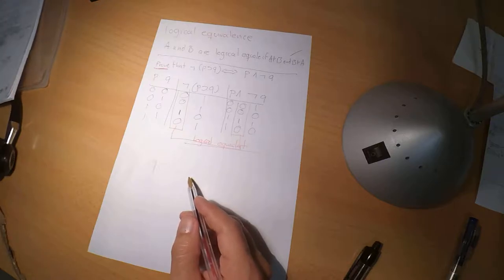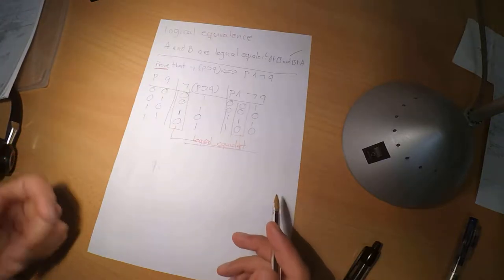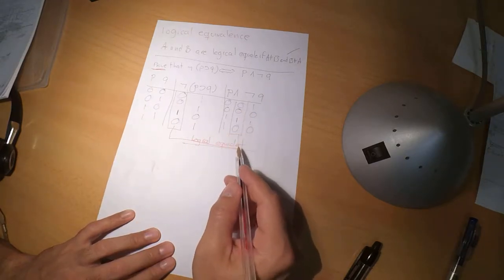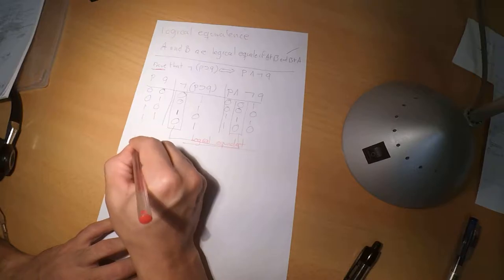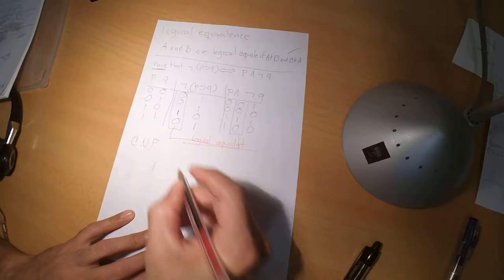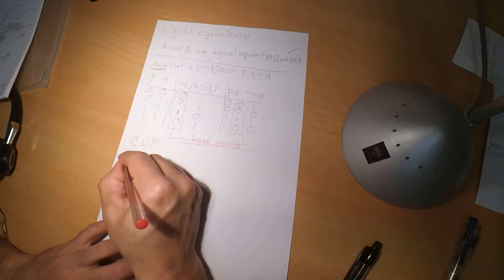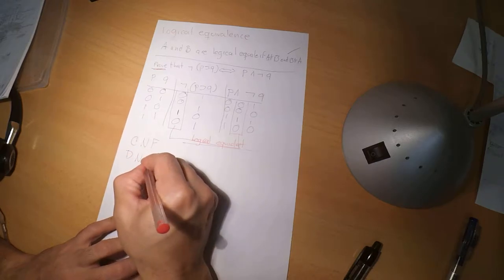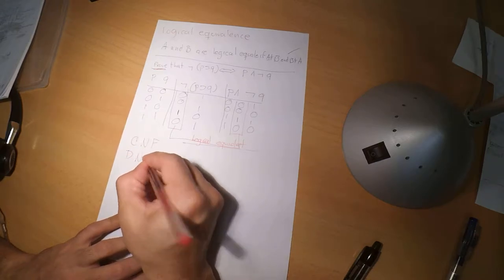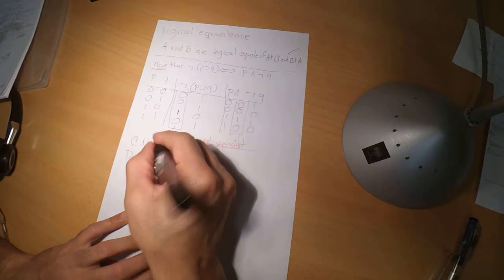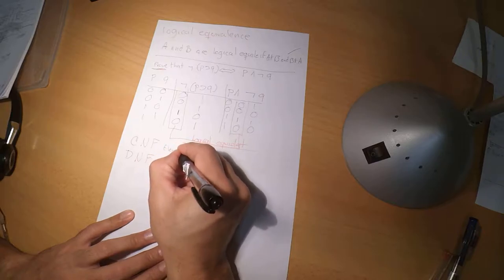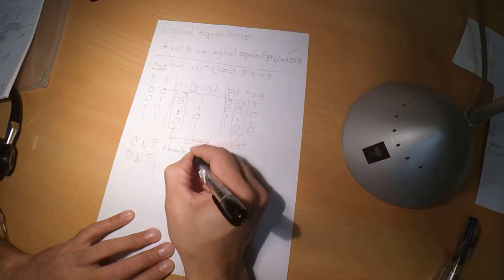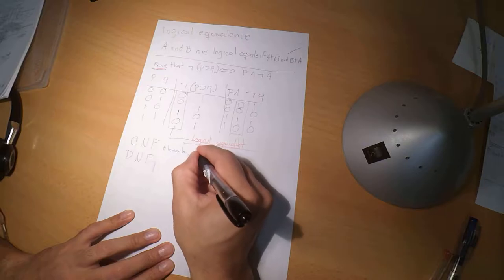Now let's check another question: what is conjunctive normal form and disjunctive normal form? The definitions are: an elementary disjunction is a conjunctive normal form, and an elementary conjunction is a disjunctive normal form.